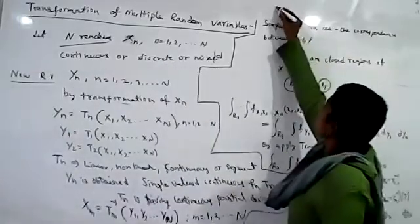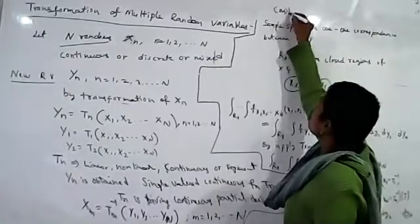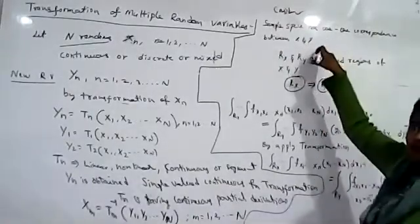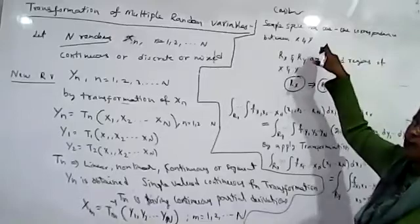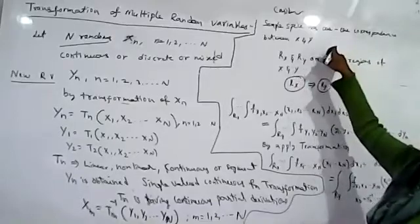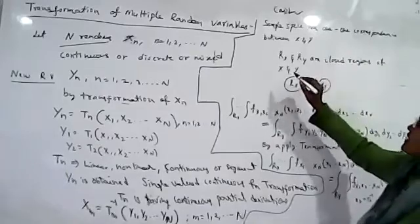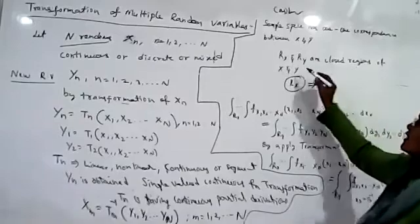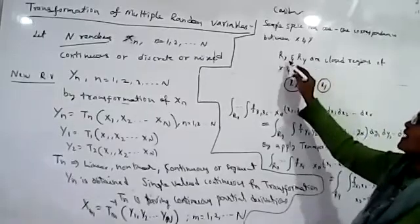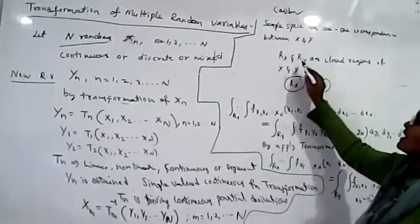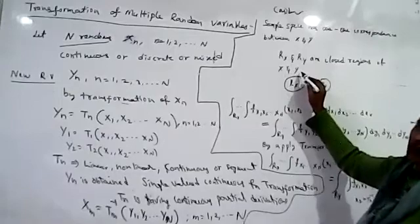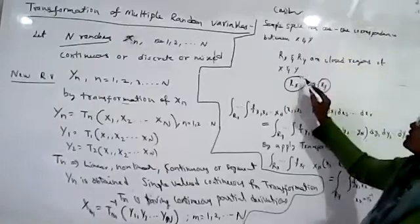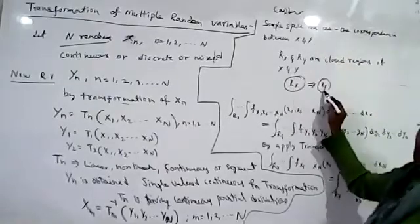Here we have considered the sample space with a one-to-one mapping between x and y — meaning for every value of x there is a corresponding value of y. We have two closed regions: R_x is the closed region of x, and R_y is the closed region of y. Since there is a one-to-one mapping, R_x is mapped to R_y.